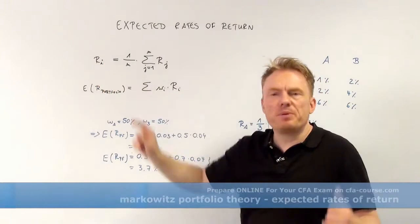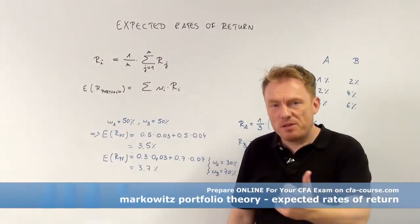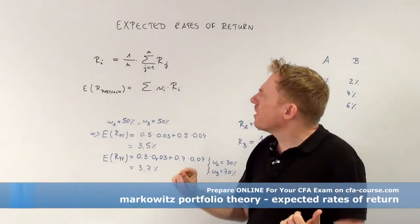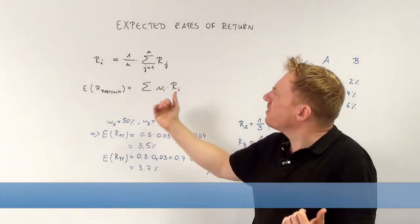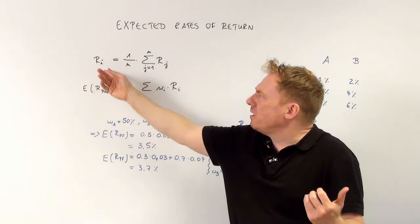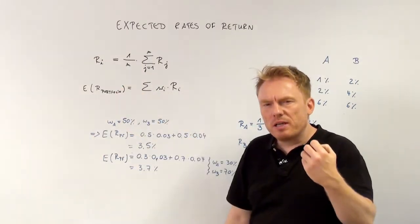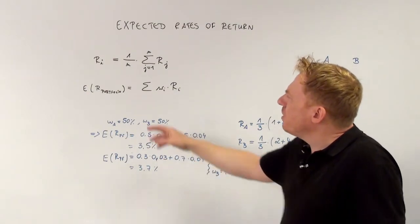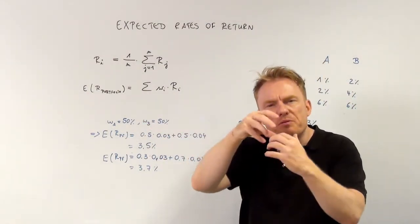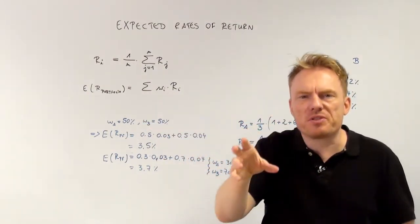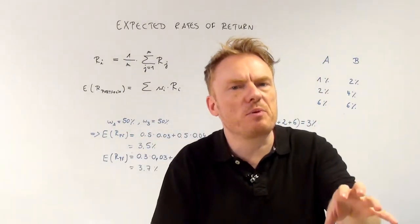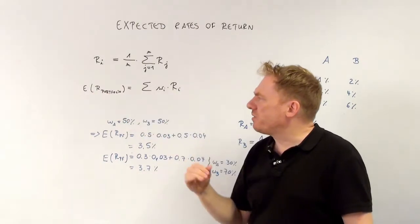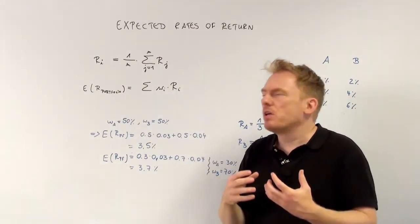First, we need to be able to compute the expected return of share i. After computing all expected returns of every different share, we need to put them into a portfolio — say 30% share A, 70% share B — and then we get an expected return of this portfolio.